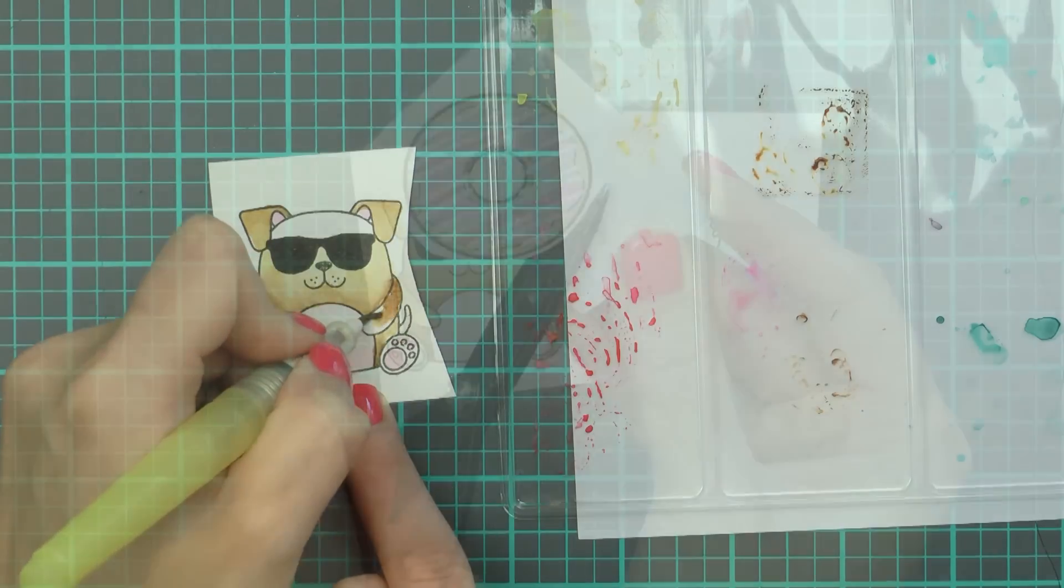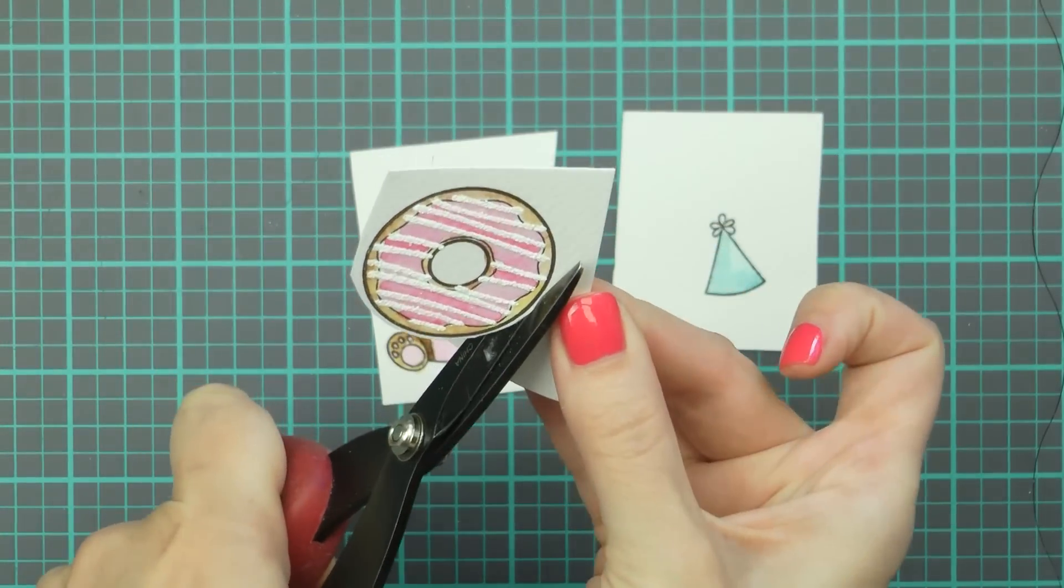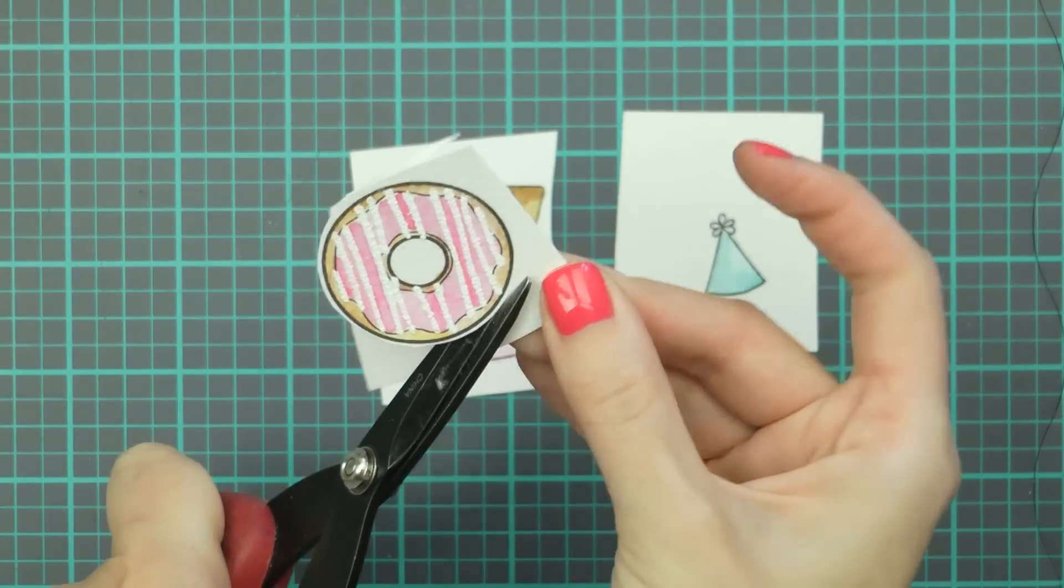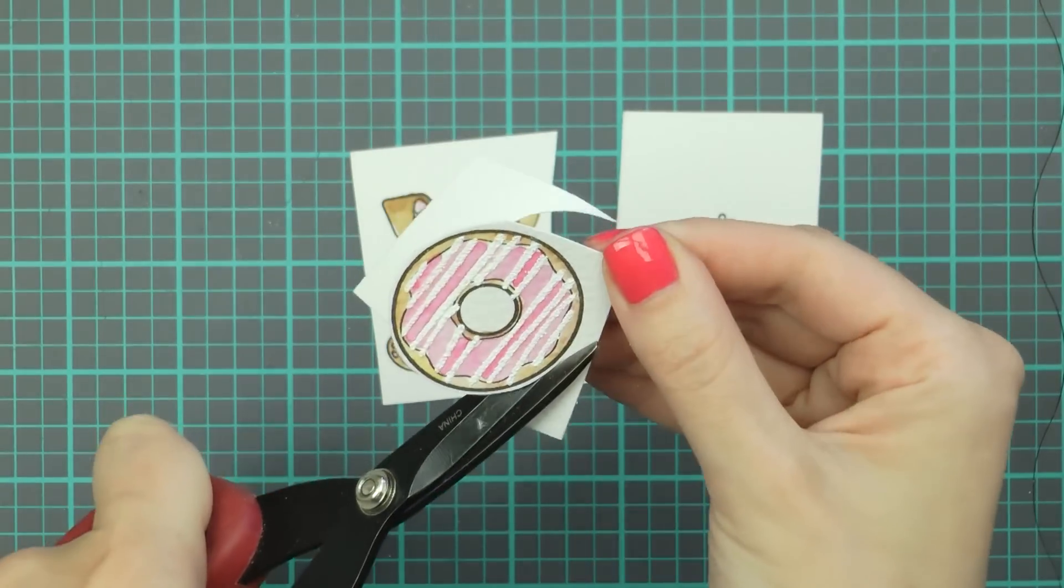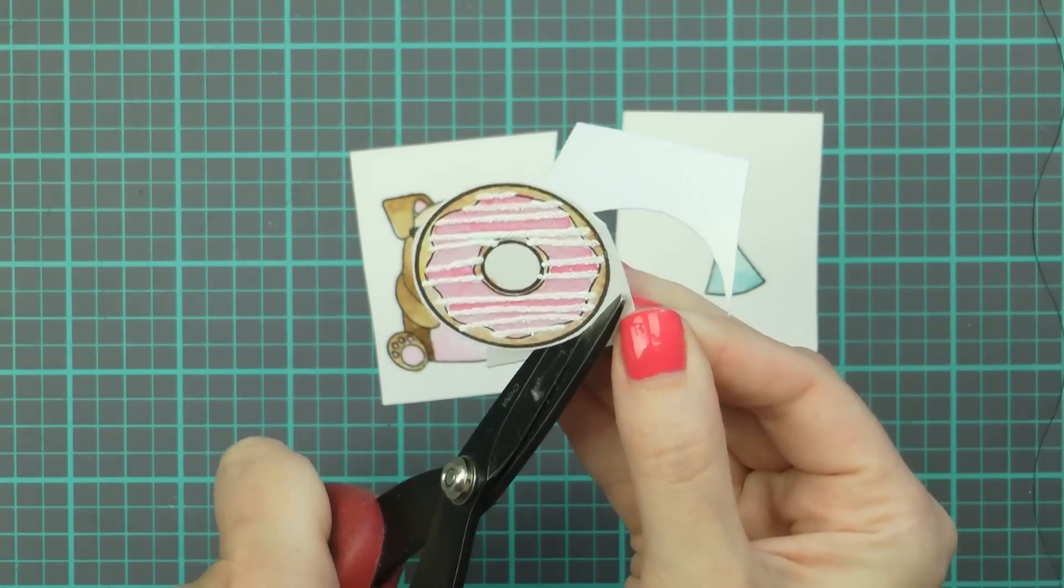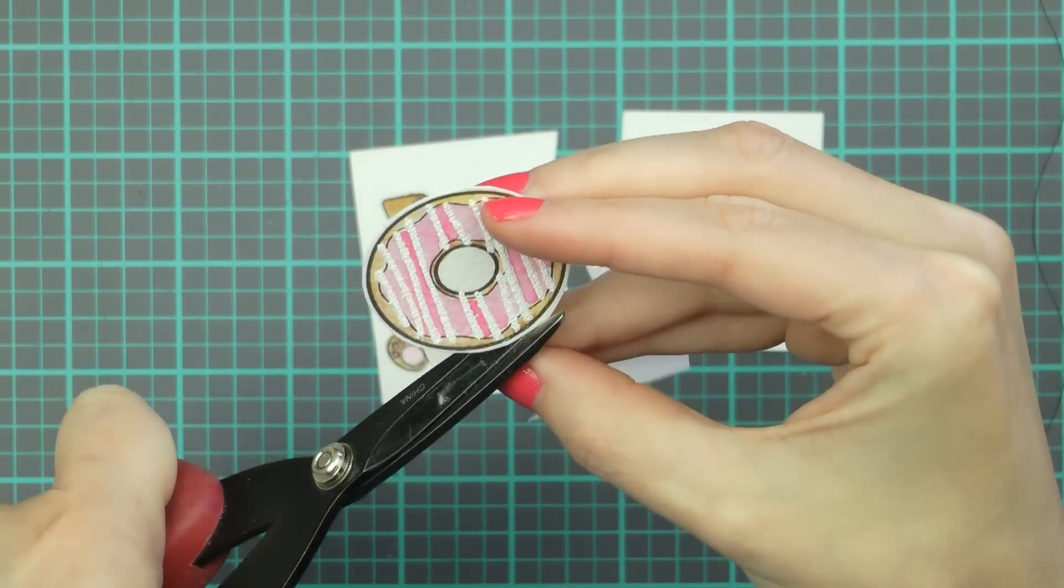Once the images were colored I used my scissors to cut the donut out, there aren't any matching dies for this donut stamp set, but this shape is pretty simple so it's very easy to cut it out with the help of scissors.